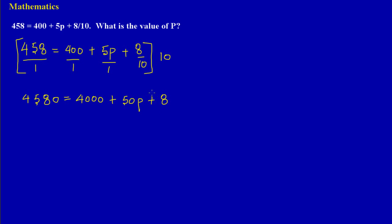Now, if you notice, I have gotten rid of the fraction, so I can just simply go ahead and calculate. I'm going to group my like terms. In algebra, we always group our like terms. So here I have 4580...